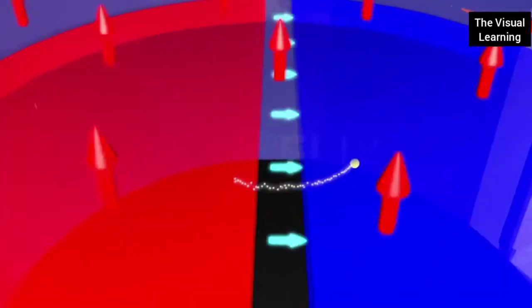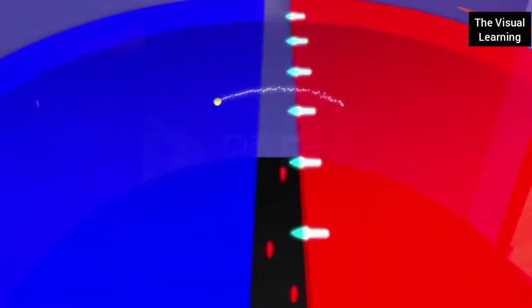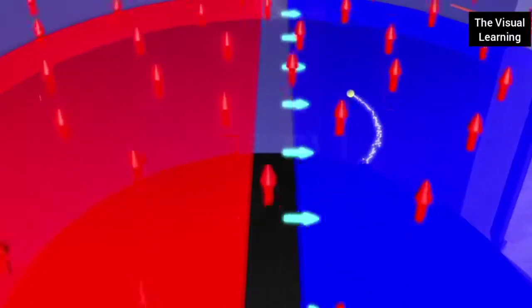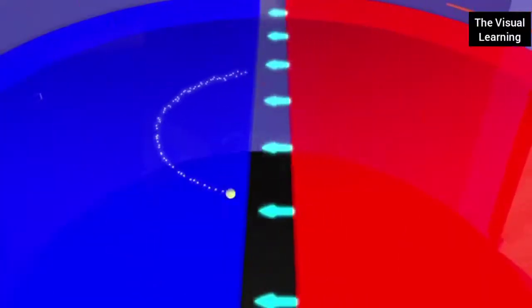This cycle repeats, increasing the speed and radius of the particle after every successive cycle. After many such cycles, a highly energetic particle emerges from the cyclotron at a very high speed.